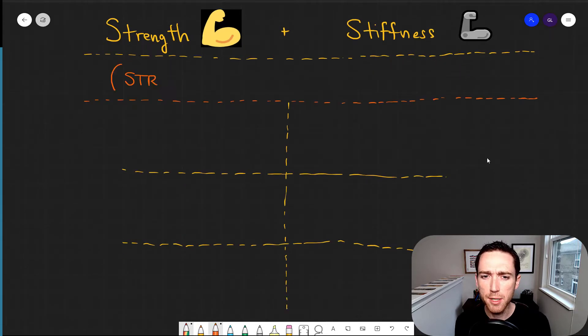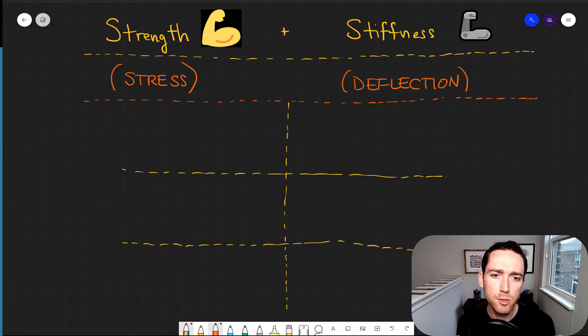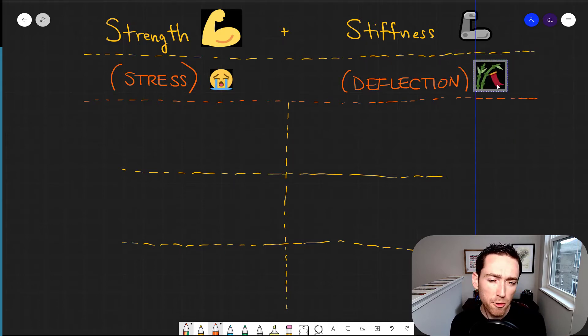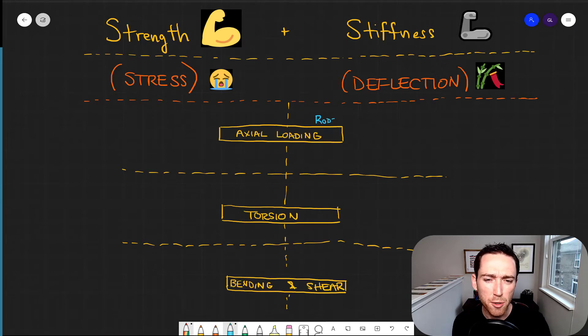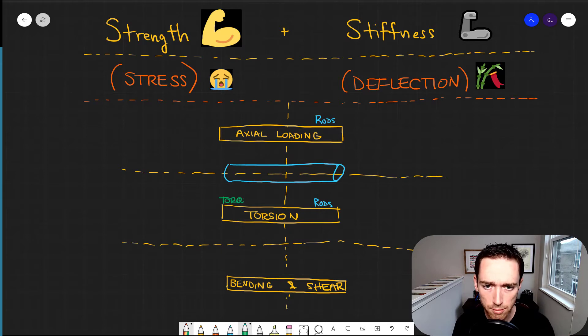But what we're talking about is we've got three basic types of stress and of deflection that we might look at. Three basic modalities. And the first modality is one where we're either pulling or pushing. And generally we're looking at some sort of rod and that would be axial loading.